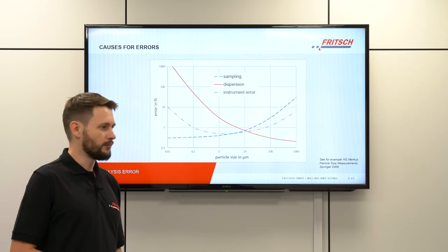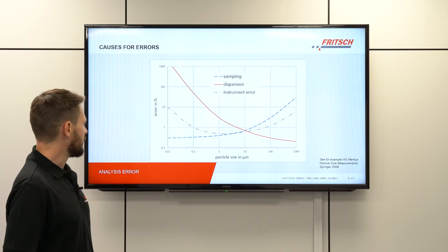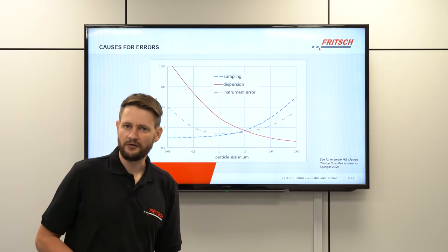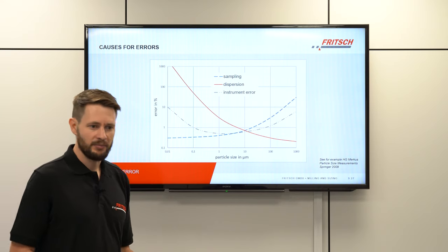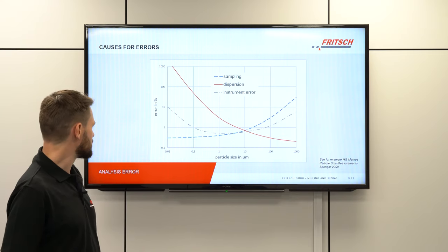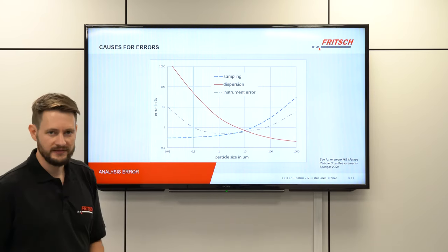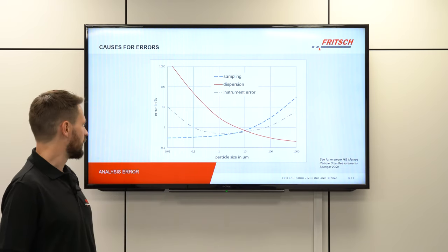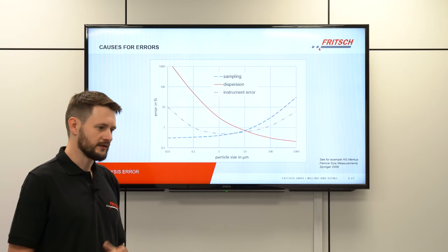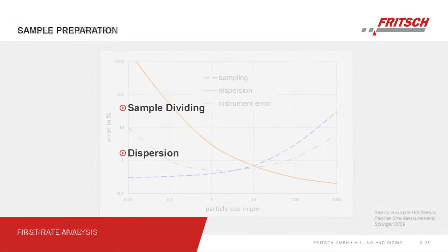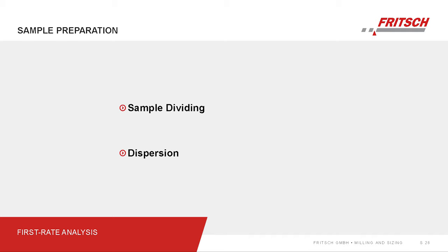Last but not least, there are instrument errors, which we cannot really influence as users. The minimum instrument error occurs around the range of 1 to 10 micrometers, due to the optical setup of the instruments — essentially physical reasons. To summarize: sample preparation basically consists of sample dividing and dispersion, which are the two main error sources in sample preparation.